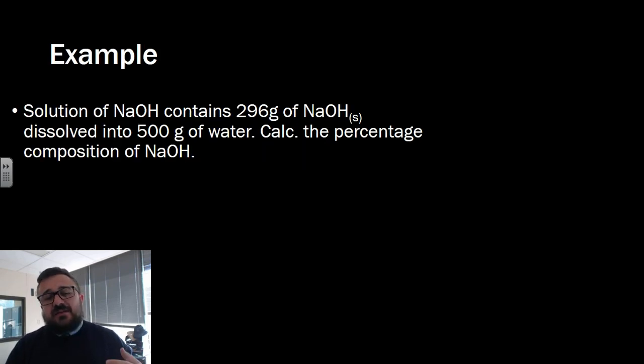Let's have a look at an example. If we've got sodium hydroxide and we dissolve 296 grams of that sodium hydroxide into 500 grams of water, we want to calculate the composition by percentage mass of sodium hydroxide.